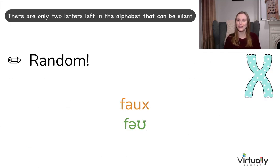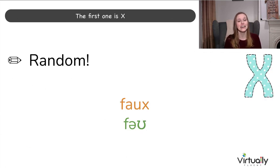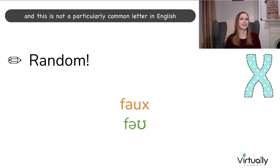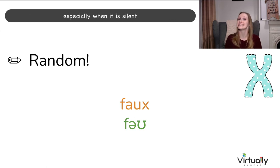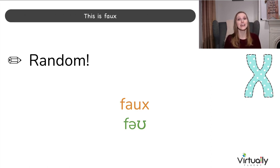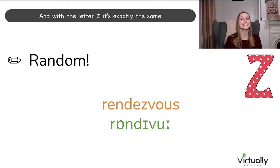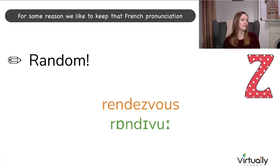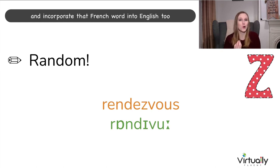There are only two letters left in the alphabet that can be silent. The first is X — this is not a particularly common letter in English, especially when silent. I can only think of one example, taken from French: faux. And with the letter Z, it's exactly the same — a rendezvous. For some reason, we like to keep that French pronunciation and incorporate those French words into English too.